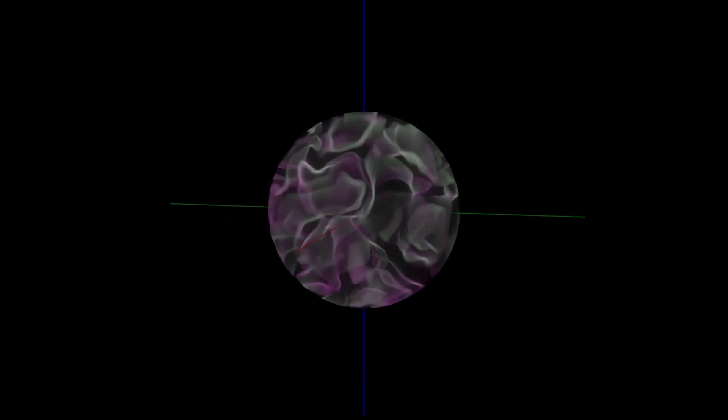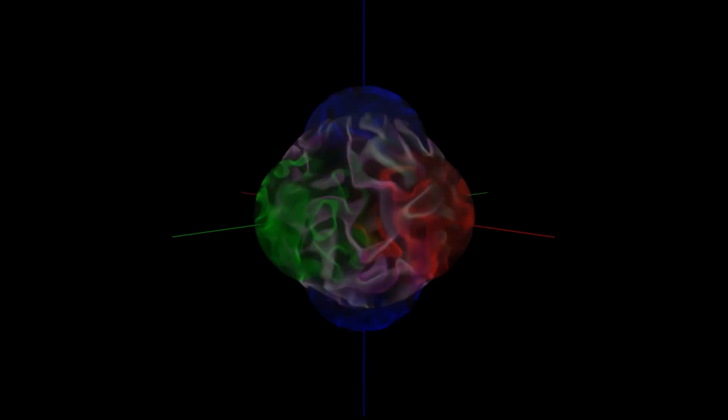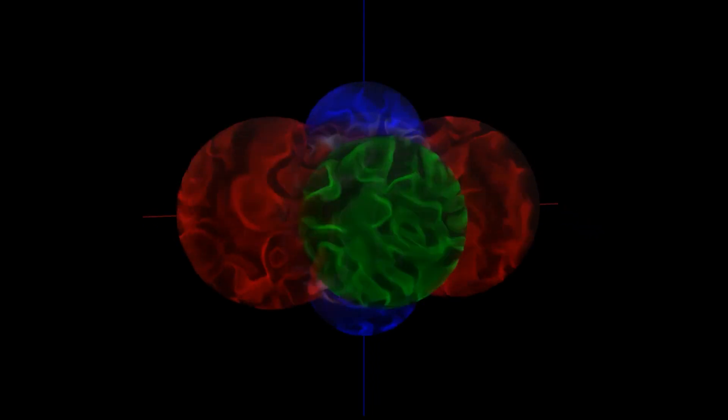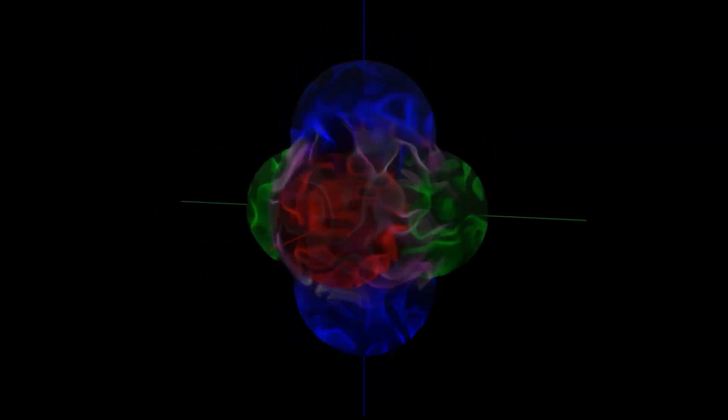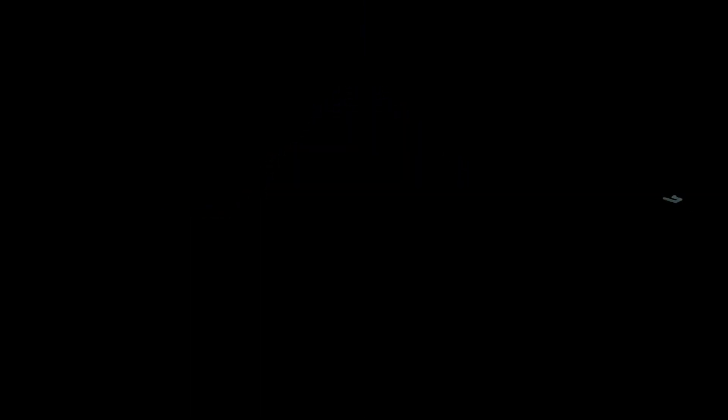For the third shell, we showed the same S and P orbitals, 3s, sodium and magnesium, and then 3px, 3py, and 3pz for aluminum through argon.